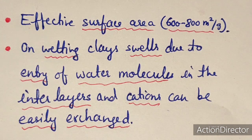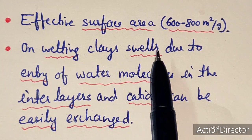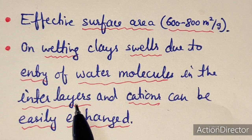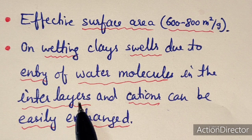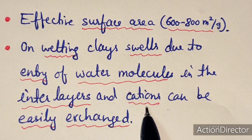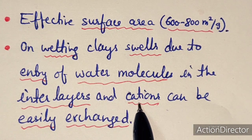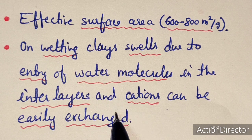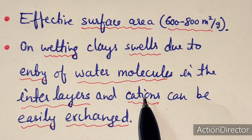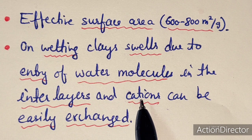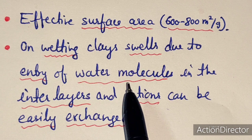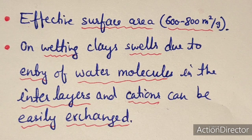A special characteristic of montmorillonite is that on wetting, the clay swells due to entry of water molecules into the interlayers, increasing the gap between layers and facilitating cation exchange. These clays have temporary porosity: when water is added they swell, and when dried they condense and become hard.